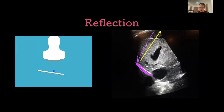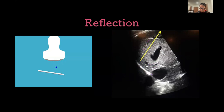Sound waves coming from the probe hit the liver and bounce back, but then the machine thinks there is liver on the other side of the diaphragm too. That's what we call a mirror image artifact. This greyish material you see is a reflection of the liver. When we perform a FAST scan, if we see a mirror image artifact we know there's no fluid above the diaphragm — and that's a concept we use to our advantage.